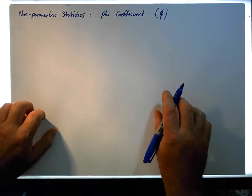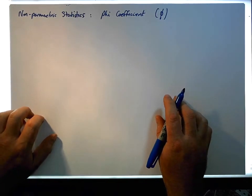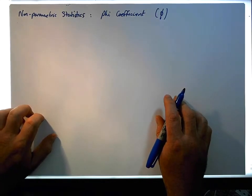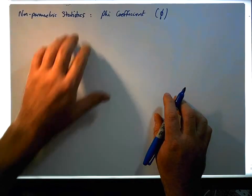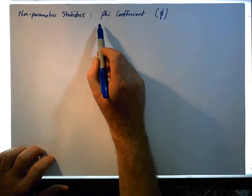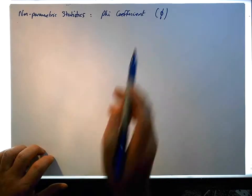Hi guys, this is Jonathan Lambert with Maths and Stats, and this short video — another video in our series dealing with non-parametric statistics — is going to concentrate on what's known as the phi coefficient.